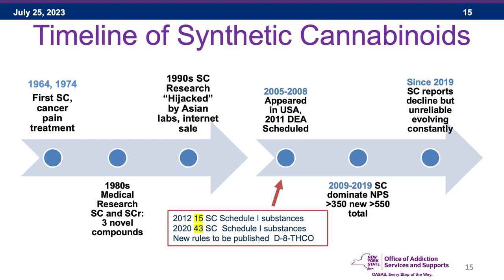By 2011, the DEA had scheduled the first group of these substances. In 2012, 15 substances were scheduled in Category 1. By 2020, 43 synthetic cannabinoids were scheduled Schedule 1 by the DEA, with more anticipated soon. From 2009 to 2019, synthetic cannabinoids dominated the NPS market. Since 2019, synthetic cannabinoid reports have actually declined, but this is probably unreliable as the substances are constantly evolving and evading detection.